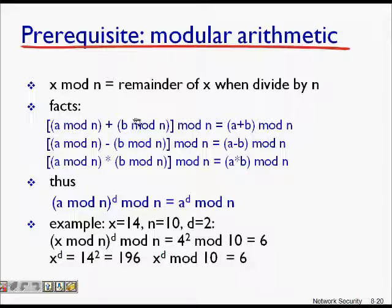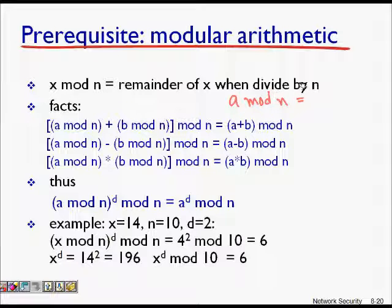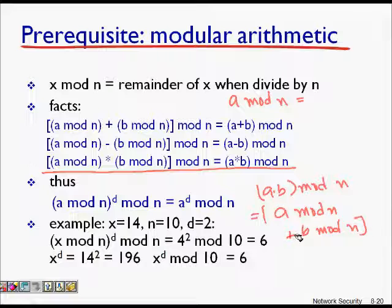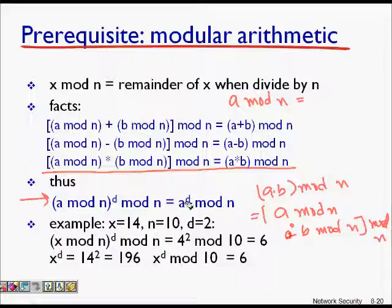To understand RSA, let's review a little modular arithmetic. A modulo n means: when I divide a by n, what is the remainder? An important property is that (a × b) mod n equals ((a mod n) × (b mod n)) mod n. We can generalize this as: (a mod n)^d mod n equals a^d mod n.